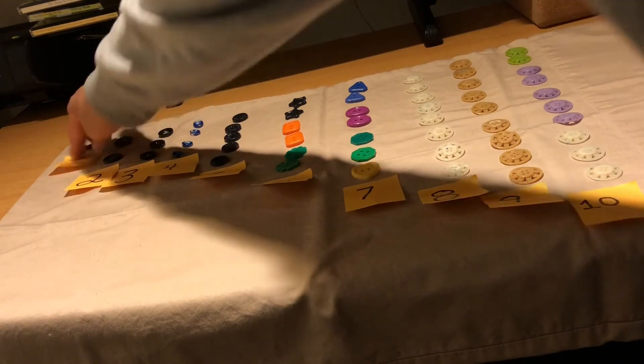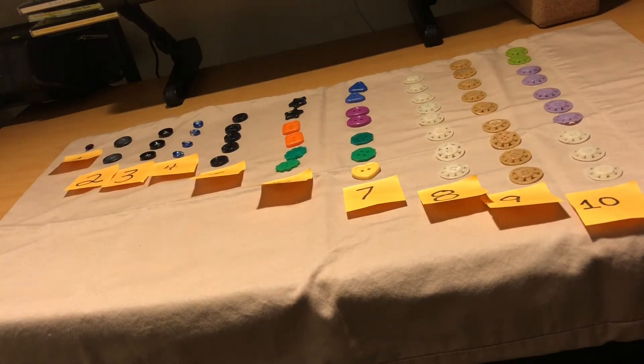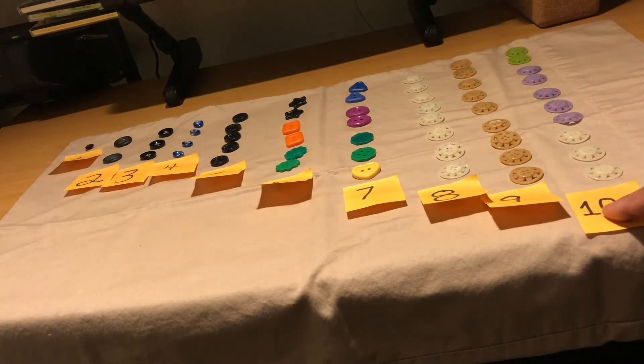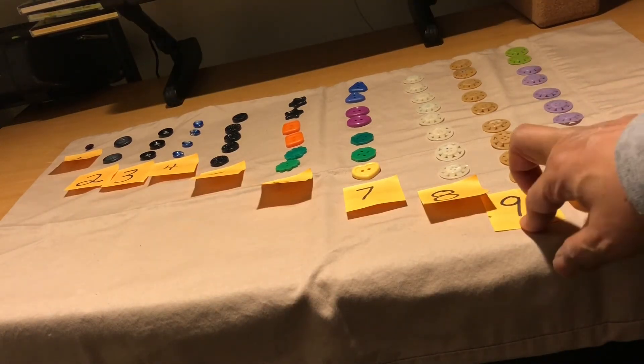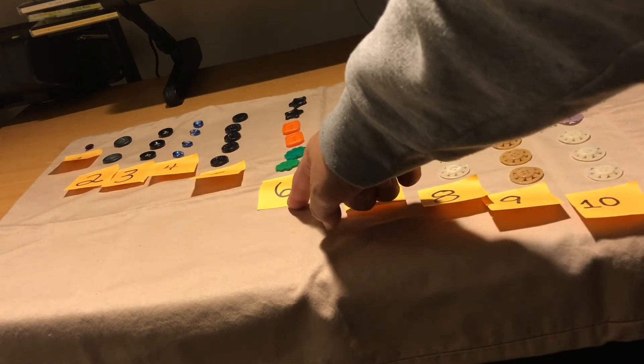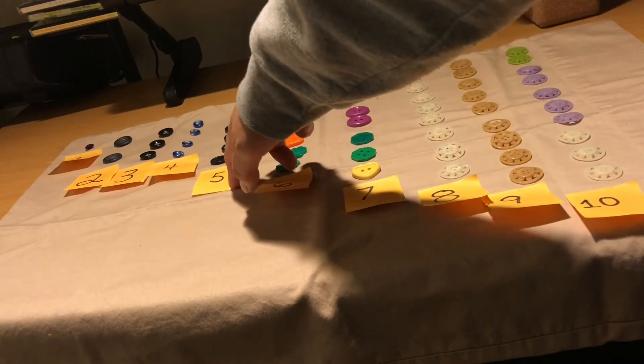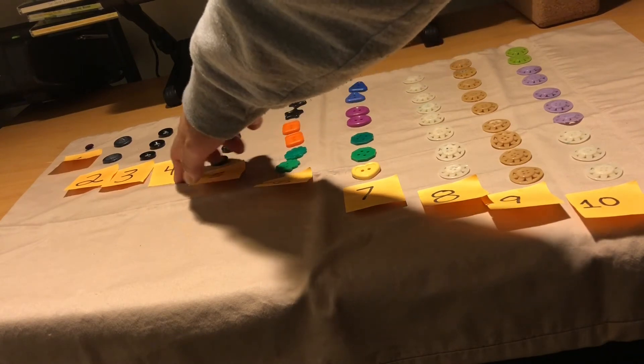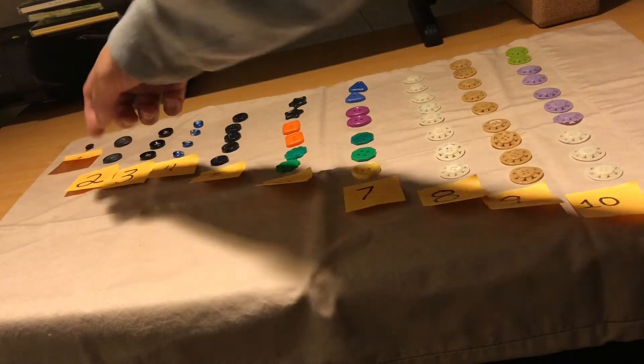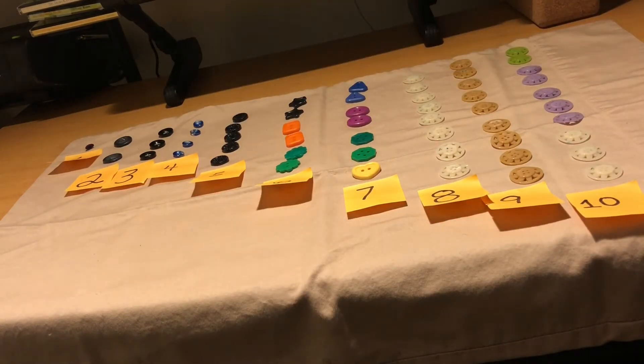So we've counted all our groups of buttons from ten to one. Ten, nine, eight, seven, six, five, four, three, two, one. Keep counting.